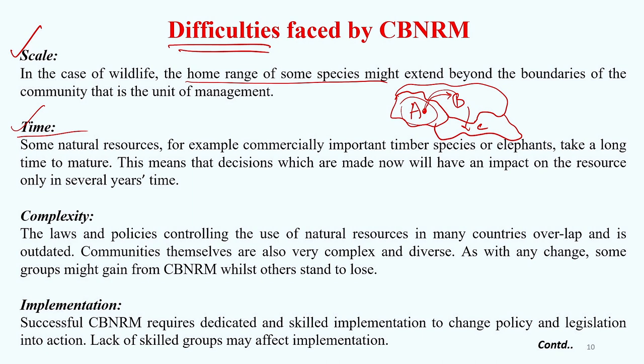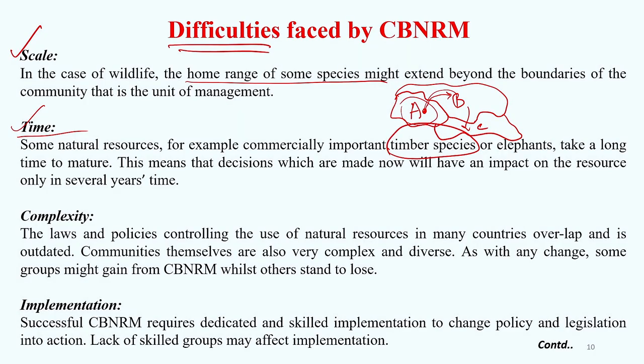Time is another challenge. Some natural resources, such as various timber species, take a long time to mature. Decisions made now will have an impact on the resource only several years down the line. If you start managing a particular timber species now, the fruits will come only when it matures, and the investment you put in for growing those plant species will not come back to you immediately — you have to wait.